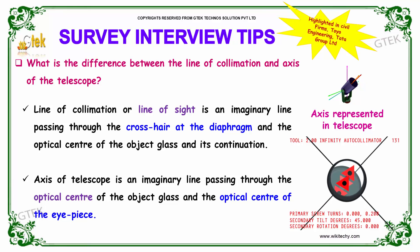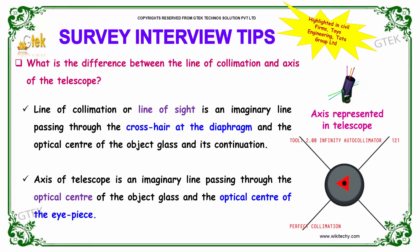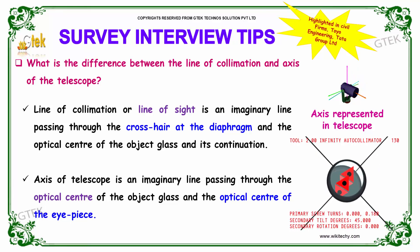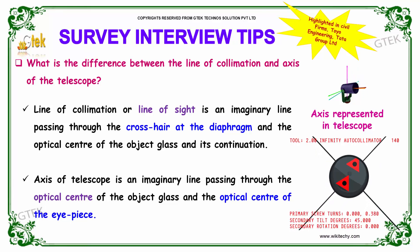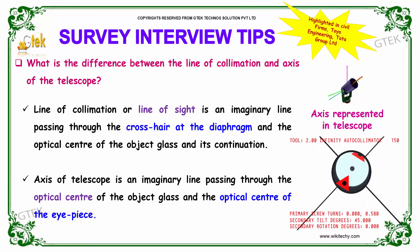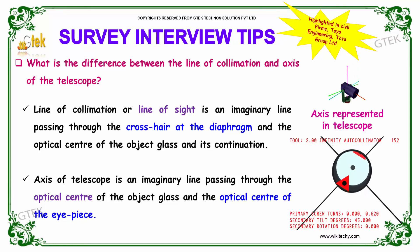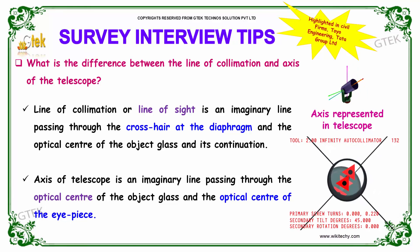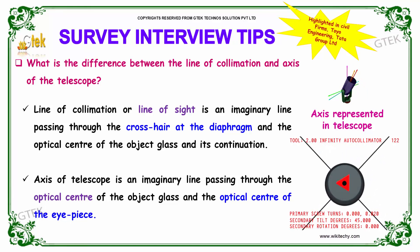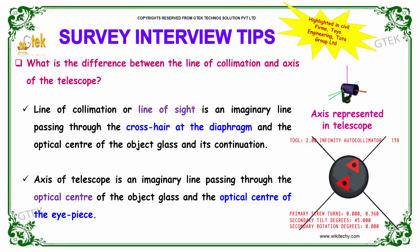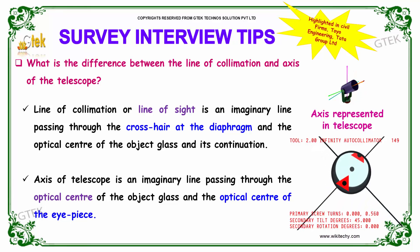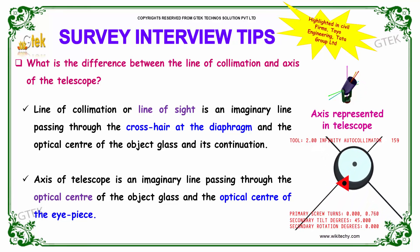The axis of telescope is an imaginary line passing through the optic center of the object glass and the optic center of the eyepiece.